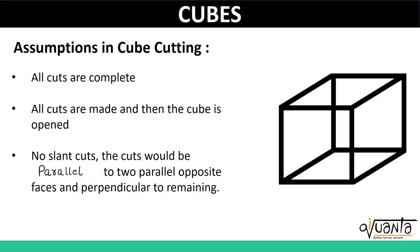The first assumption is all cuts are complete. That means whenever we cut a cube, that cut must divide the cube into two or more pieces. There won't be a case where we are only half-cutting a cube. The cut must always be a complete cut — it should divide the cube into some pieces.